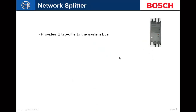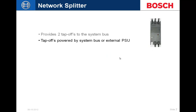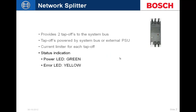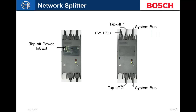The fiber splitter provides two non-redundant tap-off points from the system bus. If you have a redundant loop system and need to tap off to two non-redundant areas, you can put a splitter in the line and get a break-off onto two separate fibers. There is a power limiter that can be enabled for each tap-off point, and an external power supply is available to power the two tap-off points if the internal power supply within the network controller nears its load limit.